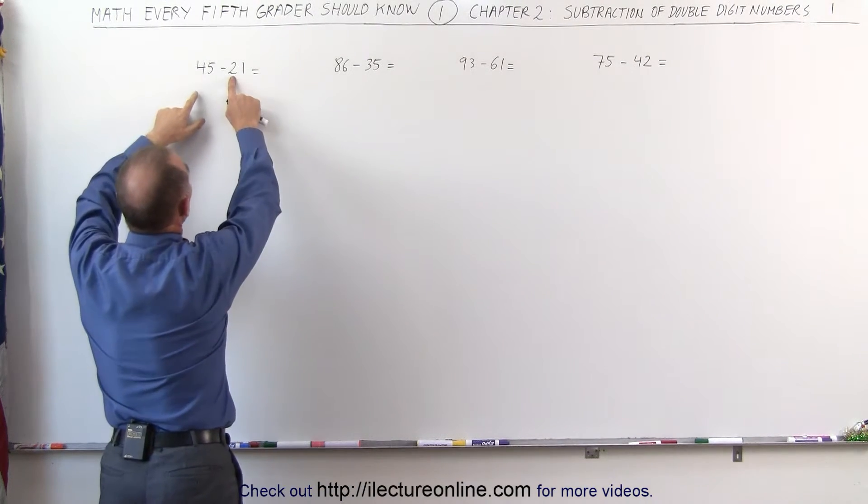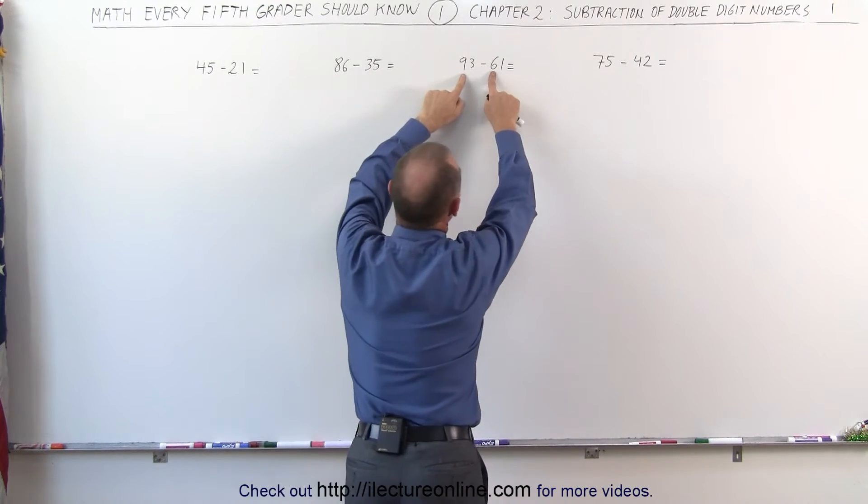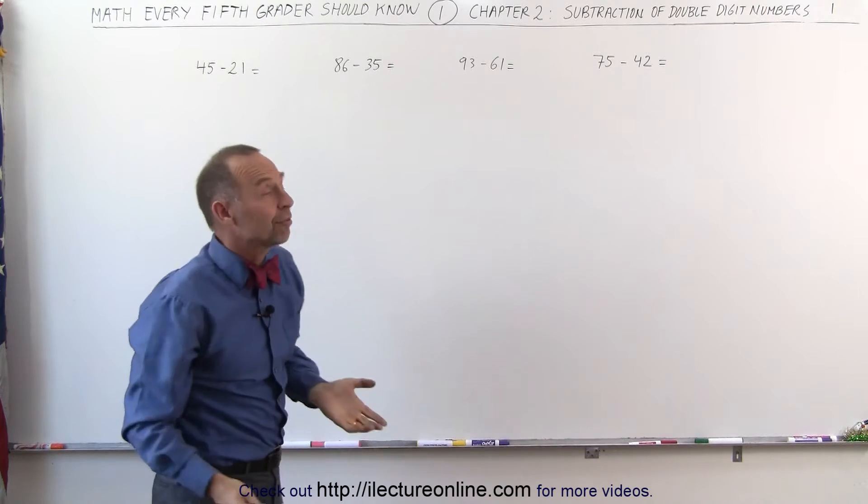Also notice that 20 is smaller than 40, 30 smaller than 80, 60 is smaller than 90, and 40 smaller than 70. So in that case it's very straightforward.